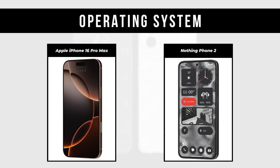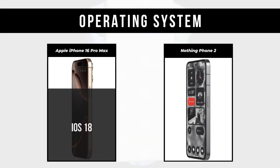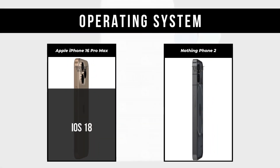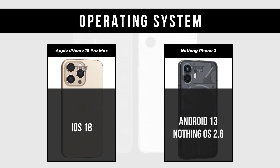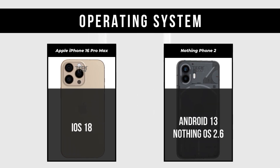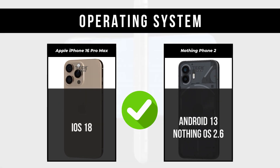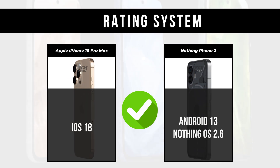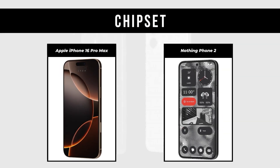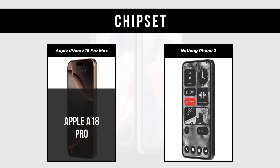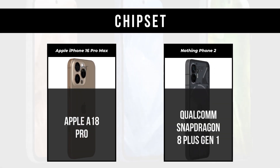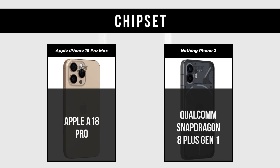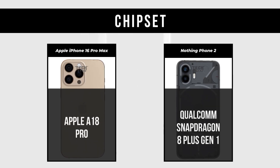Operating System: Apple iPhone 16 Pro Max is iOS 18; Nothing Phone 2 is Android 13, Nothing OS 2.6. Chipset: Apple iPhone 16 Pro Max is Apple A18 Pro; Nothing Phone 2 is Qualcomm Snapdragon 8 Plus Gen 1.